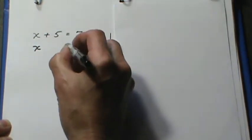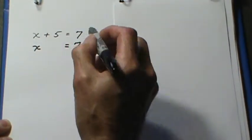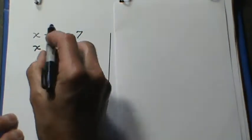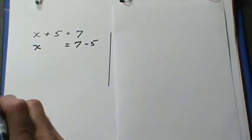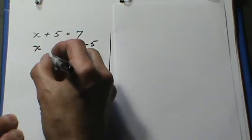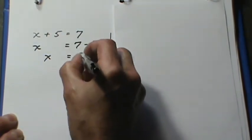And if we use the shortcut that we just talked about, I'll take the plus 5, remove it from the left side, write it as minus 5 on the right side. And then x equals 2.